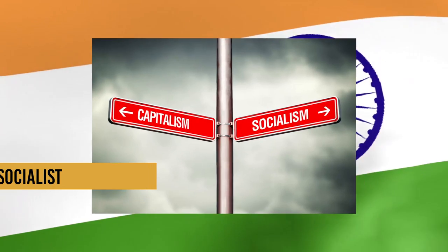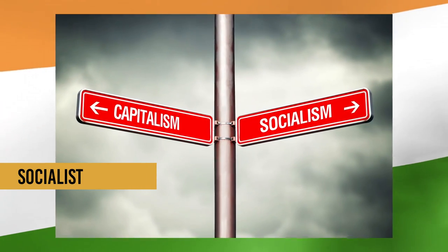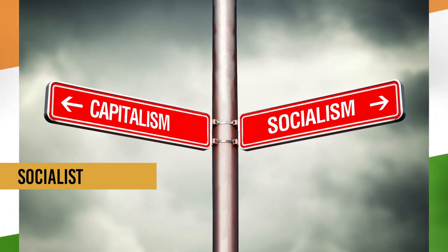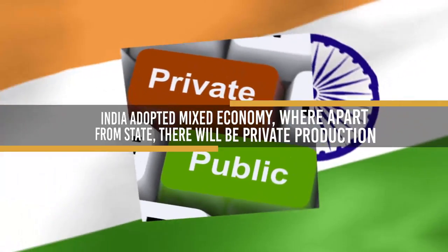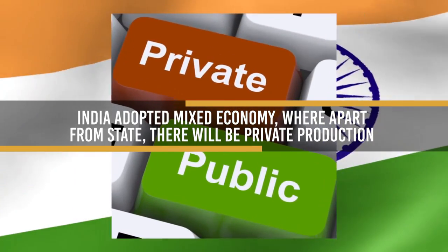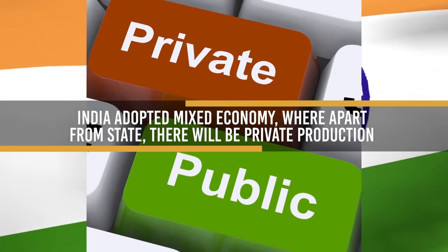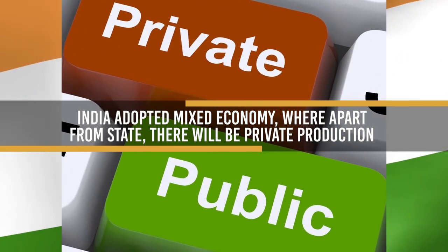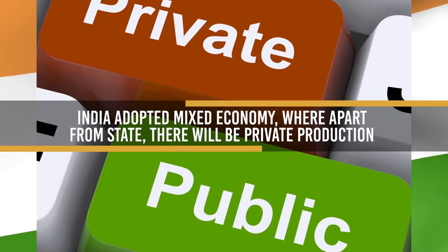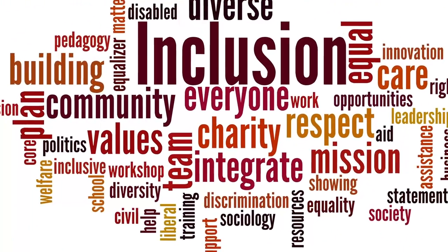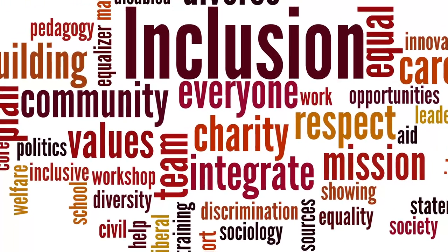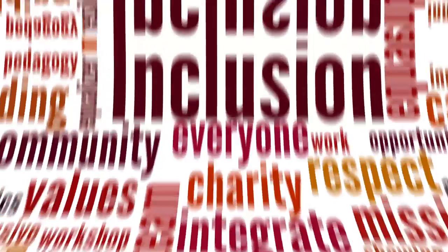Socialist: Socialism is an economic philosophy where the means of production and distribution are owned by the state. India adopted a mixed economy, where apart from the state, there will be private production too. Socialism as a social philosophy stresses more on societal equality.